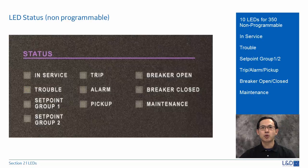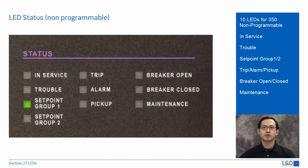Set point group 1 or 2 LEDs will turn on to green color to indicate the group of active protection elements. If set point group 1 is lit green, only the protection elements under group 1 will be active and the protection elements from group 2 will be inactive, and vice versa.